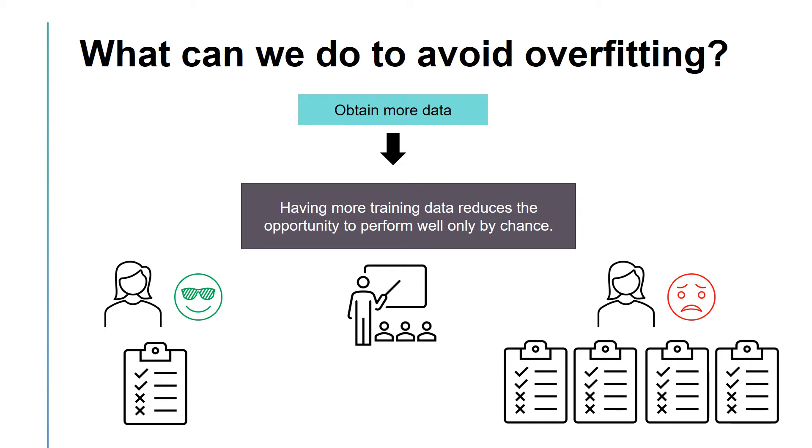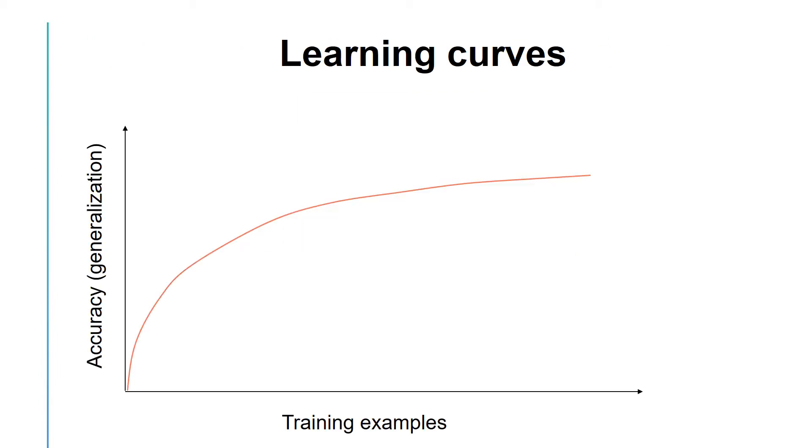We can observe the impact of training data with something known as learning curves. Learning curves are a plot of the generalization performance. They show the performance against the amount of training data. In a learning curve, the amount of training data is shown on the x-axis and the accuracy, specifically the generalization performance, is shown on the y-axis.